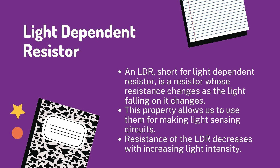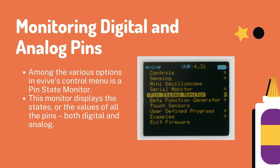The values of the resistance of the LDR may change over many orders of magnitude, with the value of resistance falling as the level of light increases. Among the various options of the evive controls menu is a pin state monitor. This monitor displays the states or values of all the pins, both digital and analog.